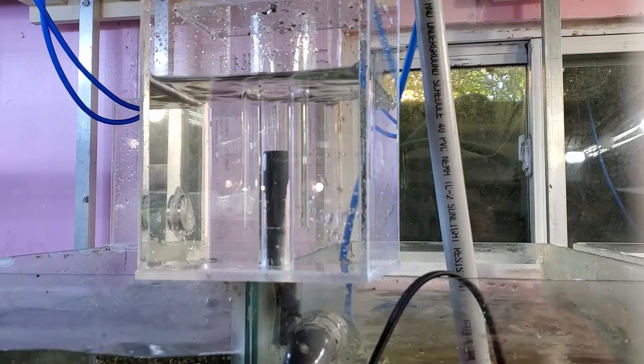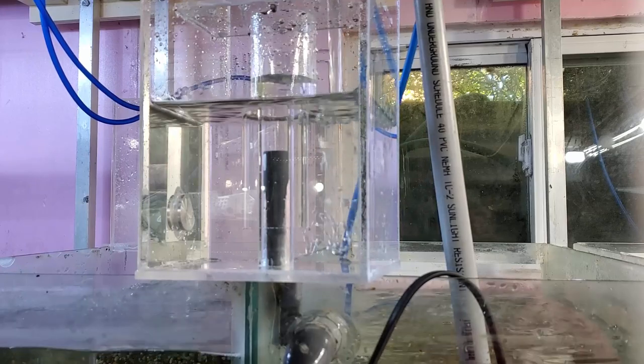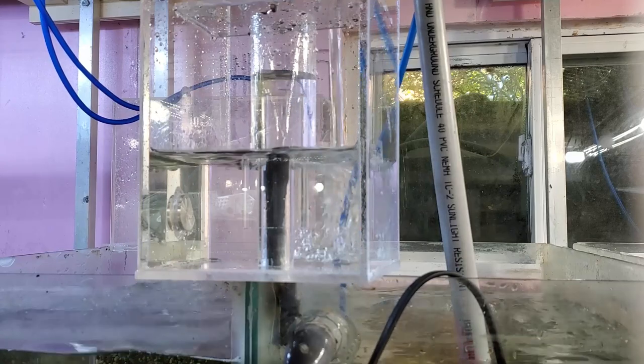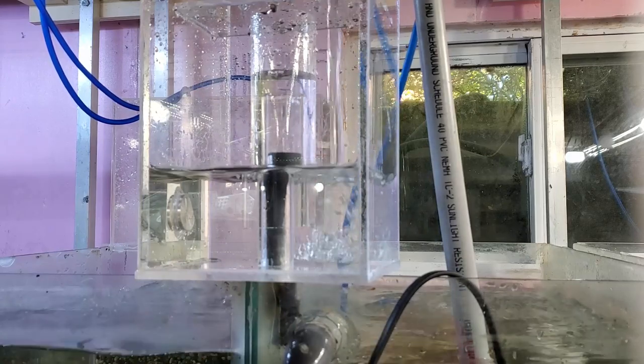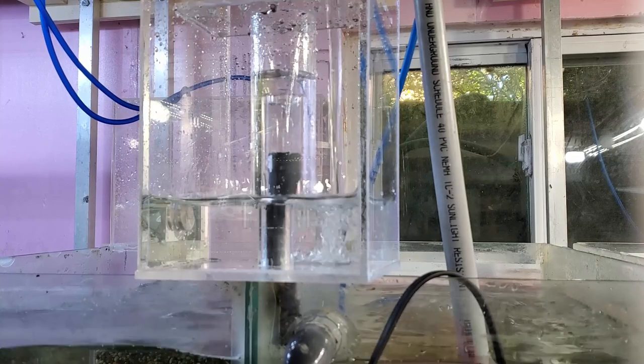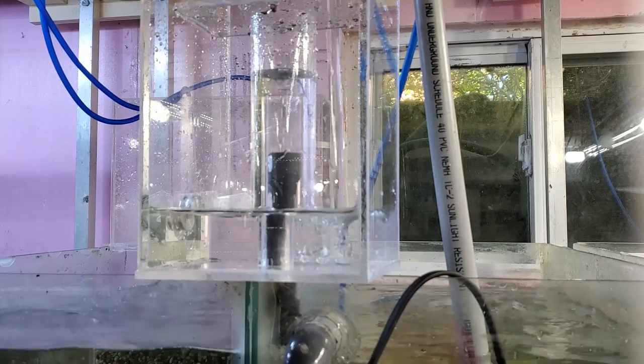Besides this being a viewer request to build an ebb and flow, the main reason I have for doing it is I want to get into some aquaponics, small scale stuff, just to see what I can grow off of fish waste and how it works as a planter filter.